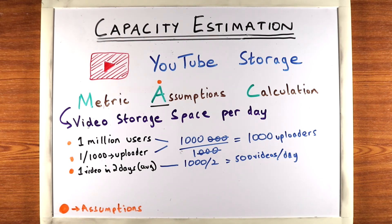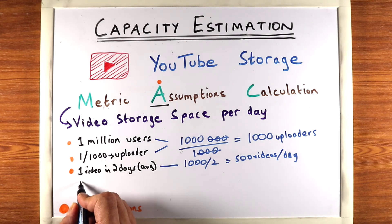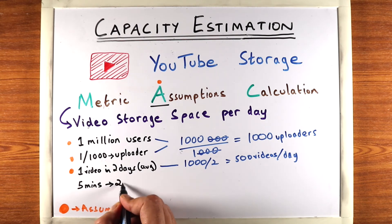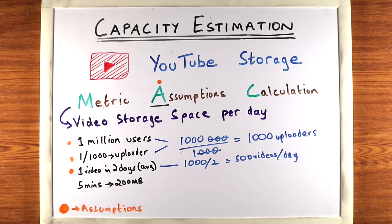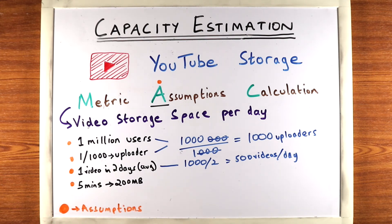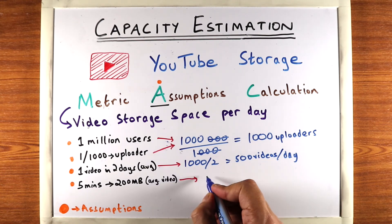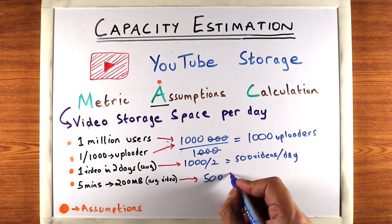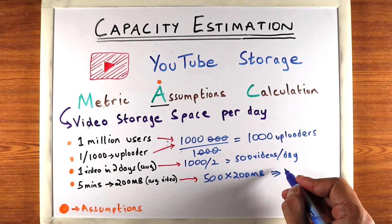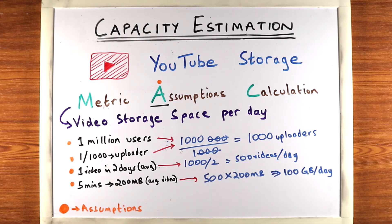The next step is to figure out how much storage each video needs. Let's assume the average video size is five minutes, and that this ends up being 200 megabytes. The goal here is not to assume perfectly accurate numbers, but to show your thought process — that you can actually calculate these things. For 500 videos a day at 200 megabytes each, that's 200 MB times 500, which is 100 gigabytes per day to store these videos.